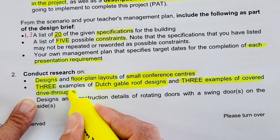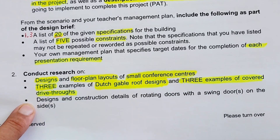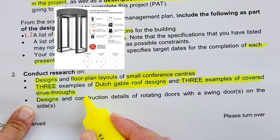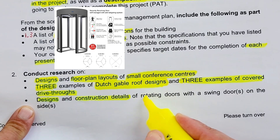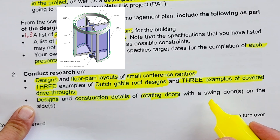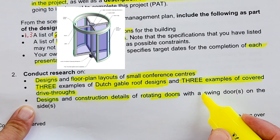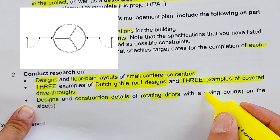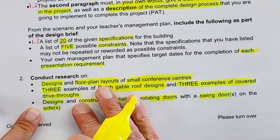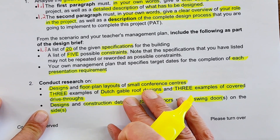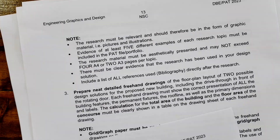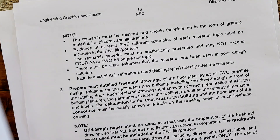The third part is the designs and construction details of rotating doors with a swing door on the sides. Those are the three overarching components in your research. They then go further to detail the following notes.